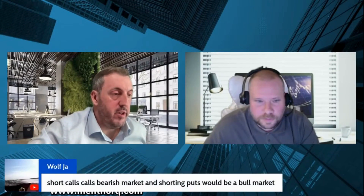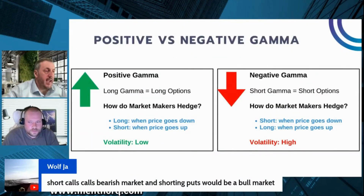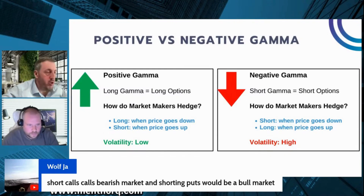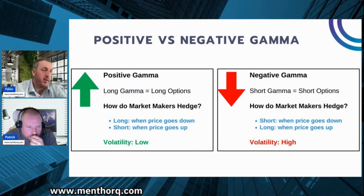Negative gamma doesn't mean that the price is going to drop — it means that the price will be more volatile. You could see big swings throughout the day, but being in negative gamma doesn't mean the market is going to drop. It just means volatility will be higher. As a trader, volatility is your currency, so you want to be positioned to capitalize on those moves.